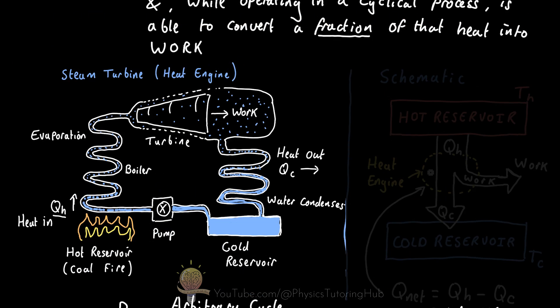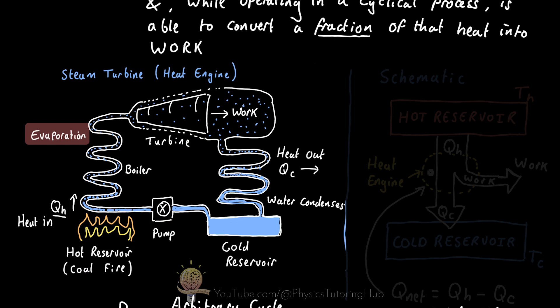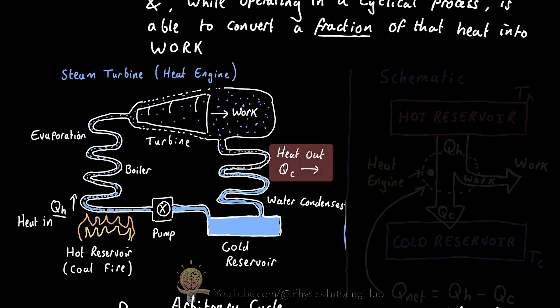We can also consider a steam turbine in a power plant as a heat engine. It would have a hot reservoir to supply heat — for example a coal fire — which heats up water and turns it into steam. This high pressure steam then drives a turbine, converting some of the heat into work. The leftover heat in the remaining steam must be dumped into a cold reservoir so that the steam can be condensed into cold water and the cycle can repeat.